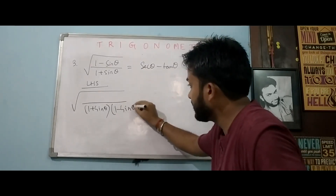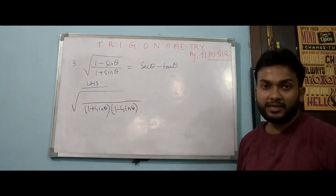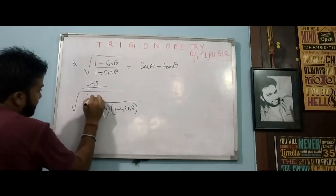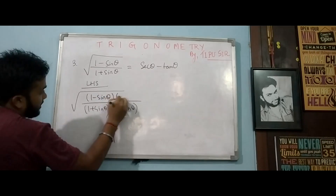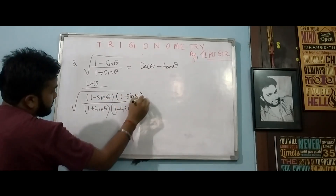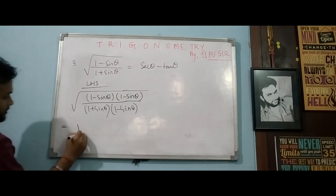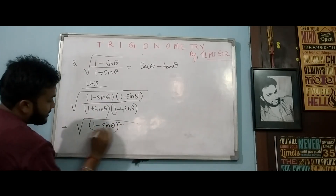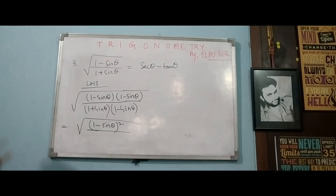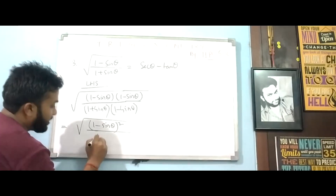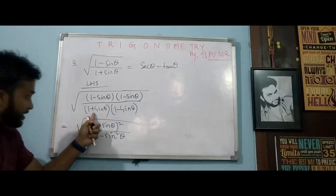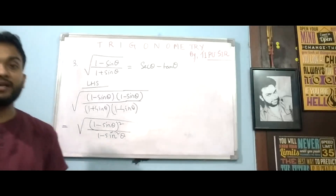We will multiply numerator and denominator by (1 − sin theta). The numerator becomes (1 − sin theta) into (1 − sin theta), which is (1 − sin theta) whole square. The denominator becomes (1 + sin theta)(1 − sin theta) = 1 − sin²θ = cos²θ, again using the A plus B, A minus B identity.